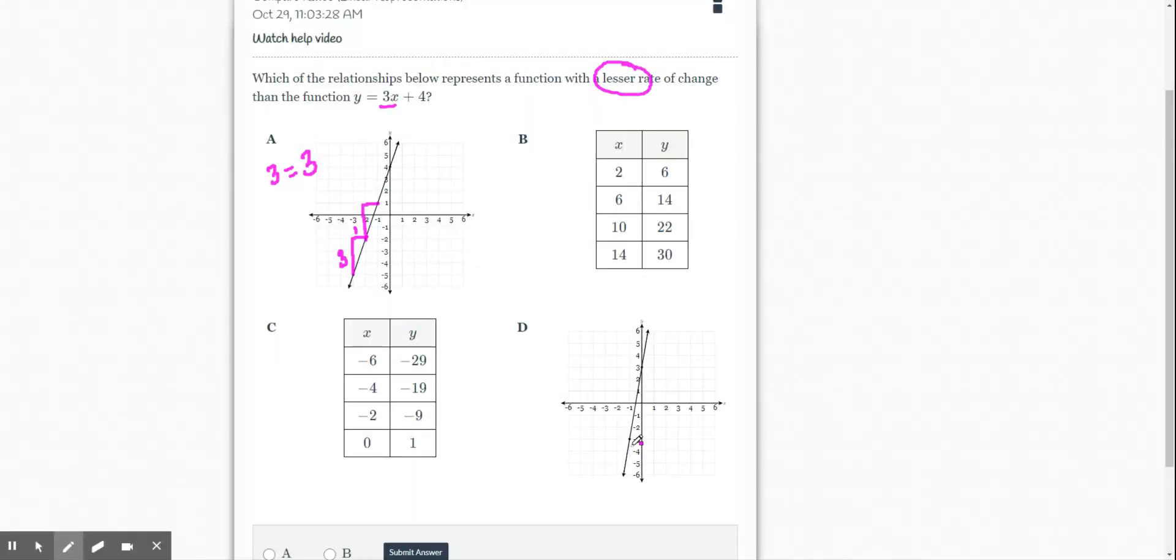We could do d really quick as well. So we're going to do, again, rise over run. So it looks like I'm going up 1, 2, 3, 4, 5, 6. My rise is 6. My run is 1. So 6 is actually a greater rate of change than 3. So we're not going to use either of those.